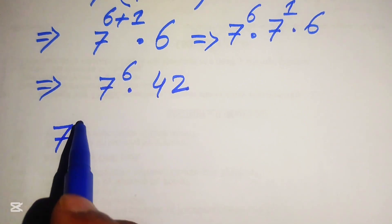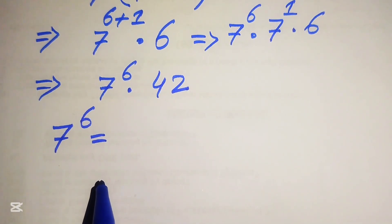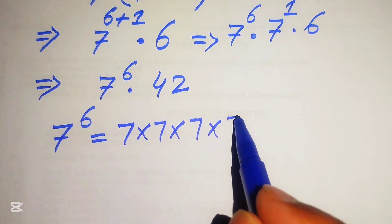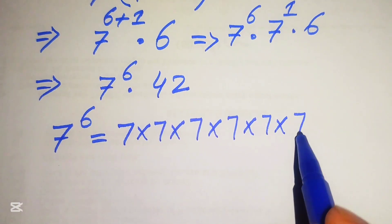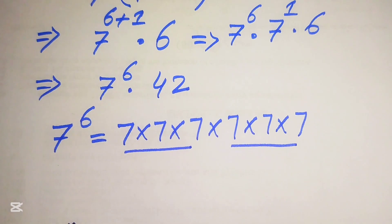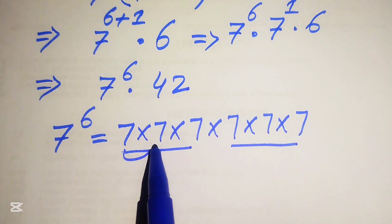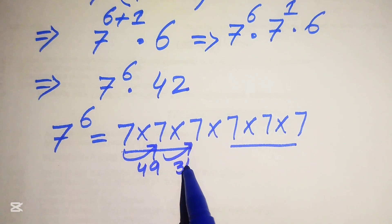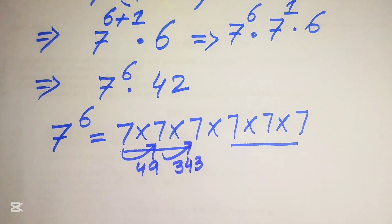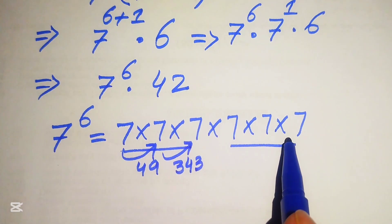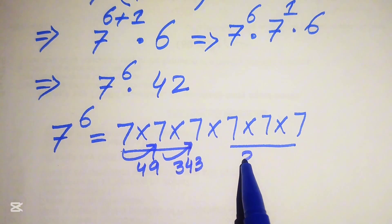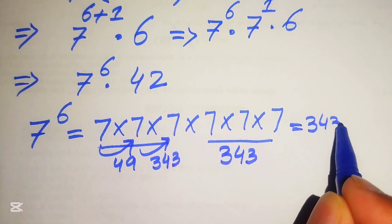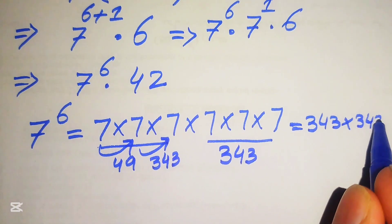The meaning of 7 to the power of 6 is that we multiply 7 by itself 6 times. We have 3 pairs of 7: 7 times 7 equals 49, 49 times 7 equals 343. Similarly, the other group of 3 sevens also equals 343. Therefore, 7 to the power of 6 equals 343 multiplied by 343.